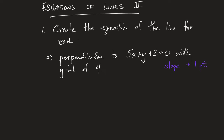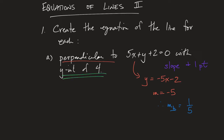We have a point, and we're told this information about being perpendicular to that line. We know that perpendicular slopes are negative reciprocals of each other. So if I take that equation and get the y all by itself, I can interpret my slope. The slope of that line is negative 5, and therefore the perpendicular slope would be positive one-fifth. We were given the y-intercept, so that's what allows us to jump straight to y equals — plug in our slope and our y-intercept, and we are good.